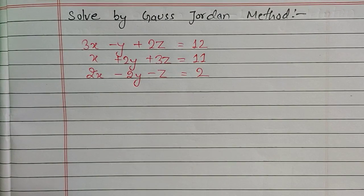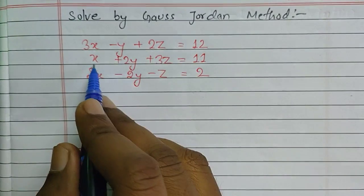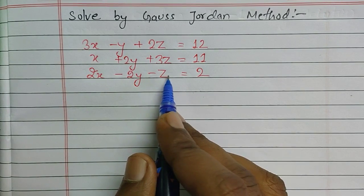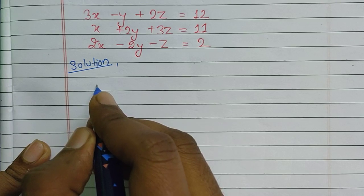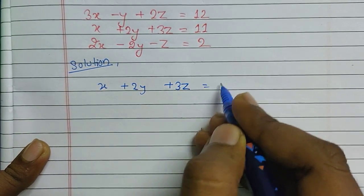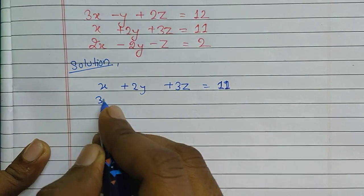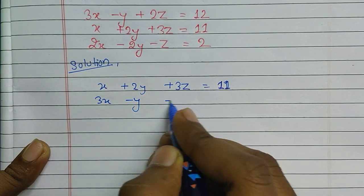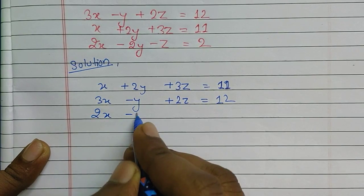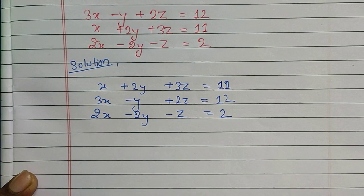Here I have selected a numerical: 3x minus y plus 2z equals 12, x plus 2y plus 3z equals 11, and 2x minus 2y minus z equals 2. We rearrange so the first equation is x plus 2y plus 3z equals 11, the second is 3x minus y plus 2z equals 12, and the third is 2x minus 2y minus z equals 2.